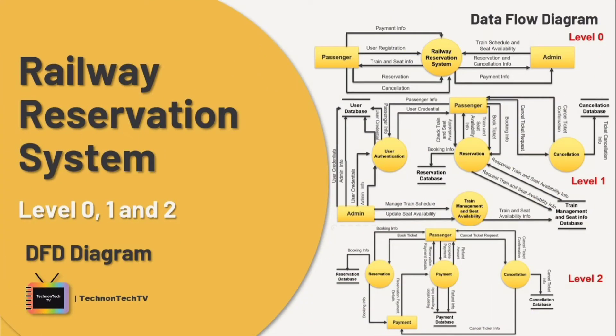Hi everyone, welcome back to TechnoTech TV. In this tutorial I am going to show you how to draw a DFD diagram for a railway reservation system. A data flow diagram (DFD) for a railway reservation system typically outlines the flow of data within the system, showing how information moves between processes and external entities.